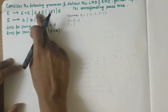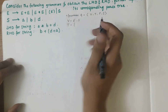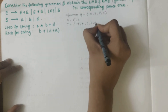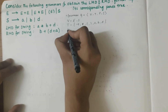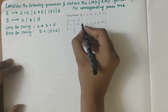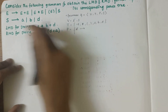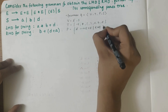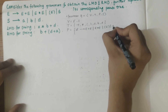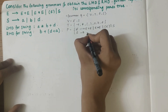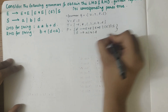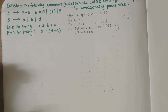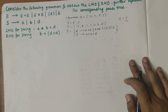The terminals are represented in small letters or symbols: plus, star, open parenthesis, close parenthesis, A, B, and D. Then we have P, the set of production rules: E derives E plus E; E derives E star E; E derives parenthesized E; E derives S; and S derives A, B, and D. The start symbol is E.